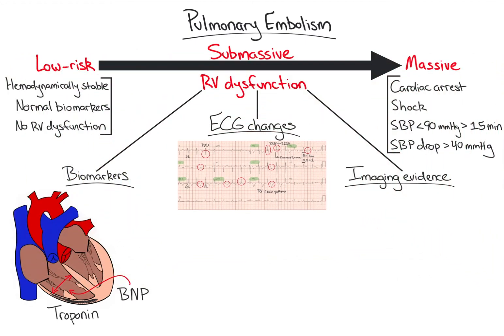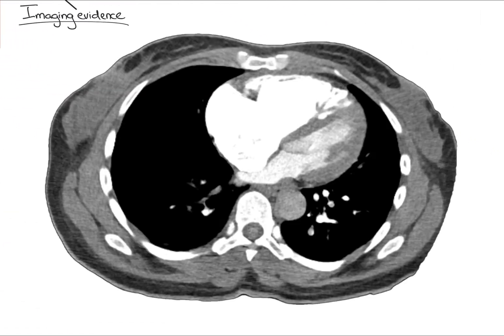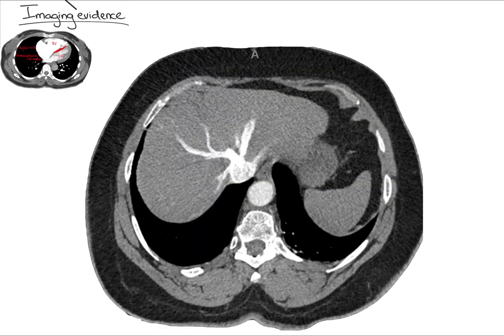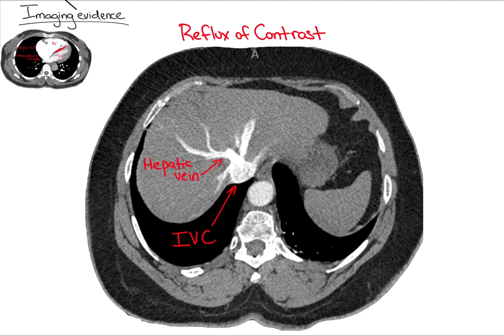Next, let's discuss imaging evidence of RV dysfunction, specifically CTPE and transthoracic echocardiogram. CT evidence of RV dysfunction includes an RV-to-LV ratio of greater than 0.9 and flattening or bowing of the interventricular septum. In addition, reflux of contrast into the IVC and hepatic vein may indicate RV dysfunction.